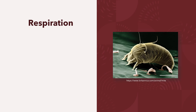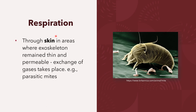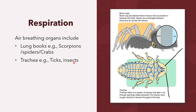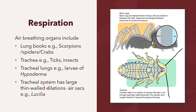Another means by which arthropods breathe is through the skin. In areas where exoskeletons remain thin and permeable, gas exchange can occur, and this is exhibited by the parasitic mites. For a summary of air-breathing organs: book lungs are used by scorpions, spiders, and crabs; trachea are used by ticks and most insects; tracheal lungs are used by larvae of the hypoderma fly; and the tracheal system with air sacs is used by flies such as Lucilia. The diagram shows the book lungs as well as the tracheal system.